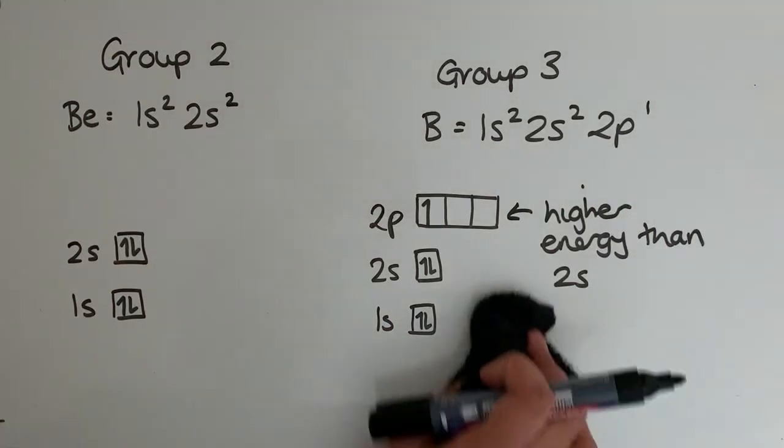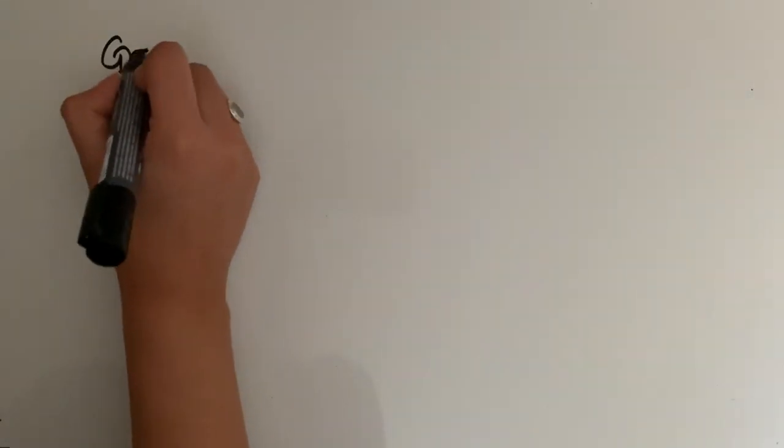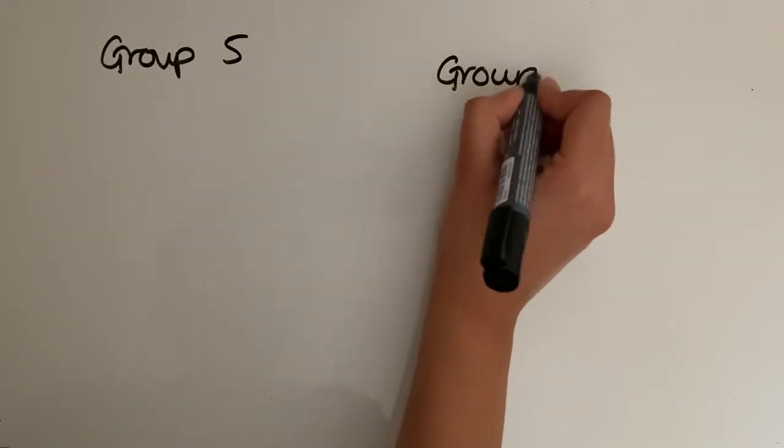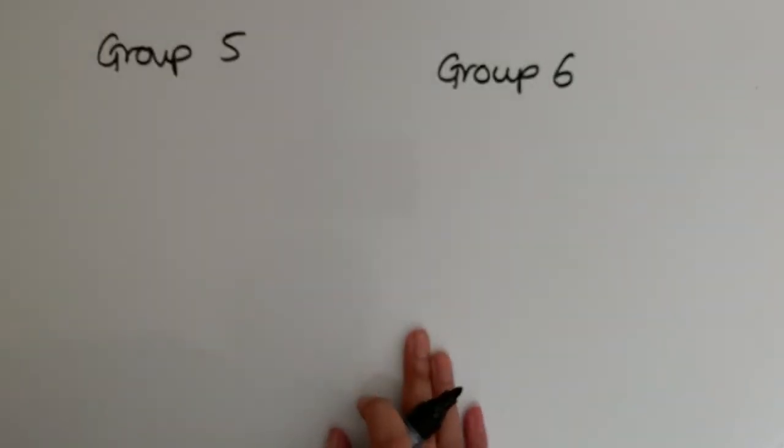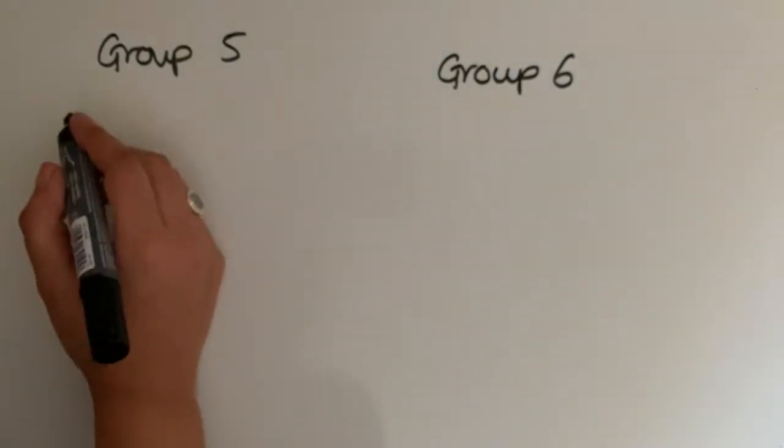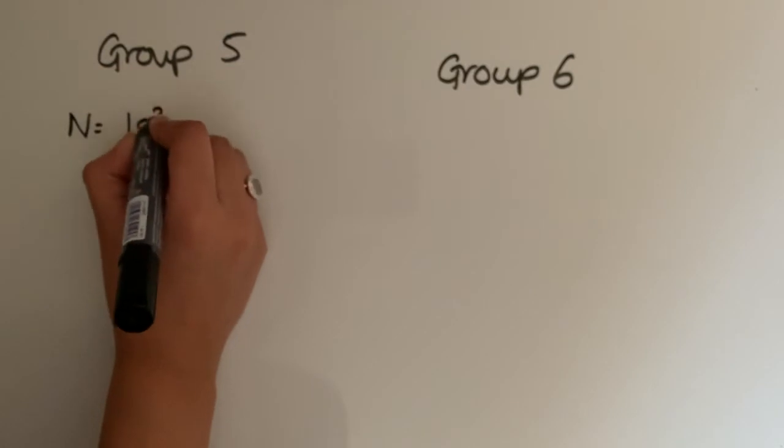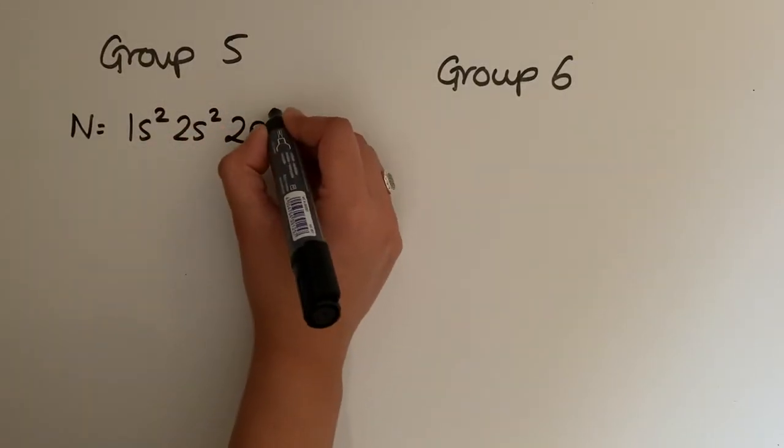Let's now have a look at the dip between group 5 and 6. For the second period, it was between nitrogen and oxygen. Nitrogen has 7 electrons, so that's 1s² 2s² 2p³.